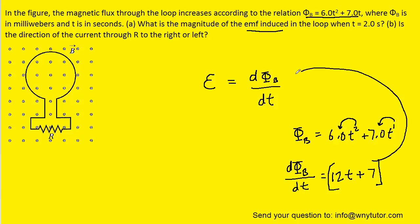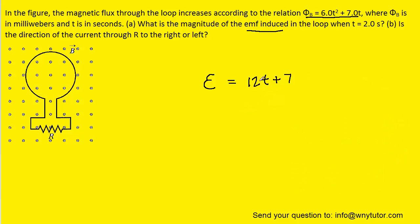And then at this point, all we have to do is plug in the given time, which was 2 seconds. So if we plug in 2 seconds and compute this, we're going to get 31. Now, since the magnetic flux was measured in milliwebers, that means that the induced EMF is going to come out in millivolts. So this becomes the correct answer to part A.